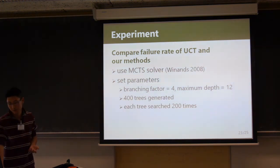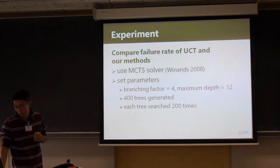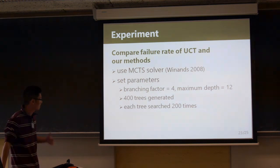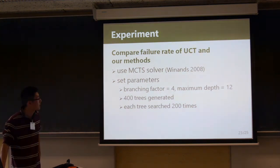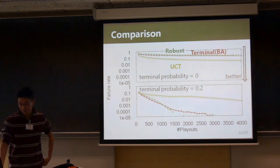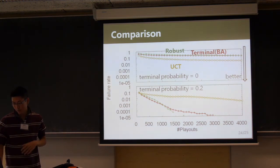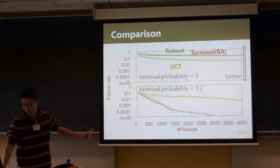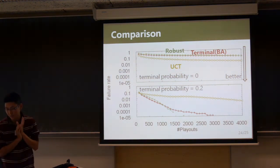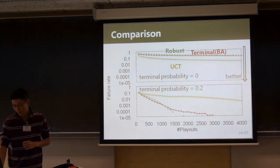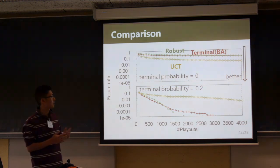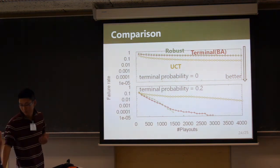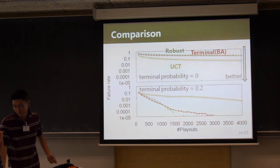I show results when the branching factor is 4 and depth is H. In this setting, 400 games are generated from each tree, searched 200 times. The terminal probability is 0 and 0.2. When terminal probability is 0, UCT is better. But when terminal probability is 0.2, our methods are better than UCT. The failure rates of our method converge to 0 first.